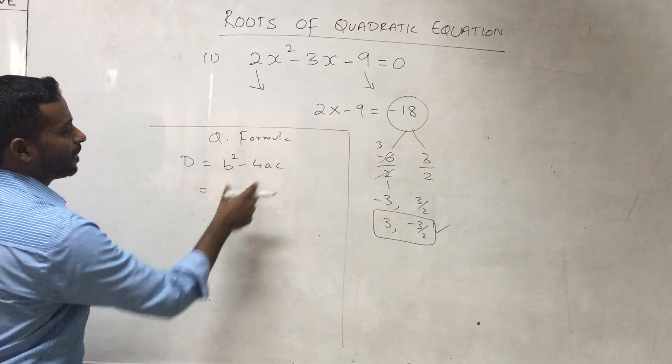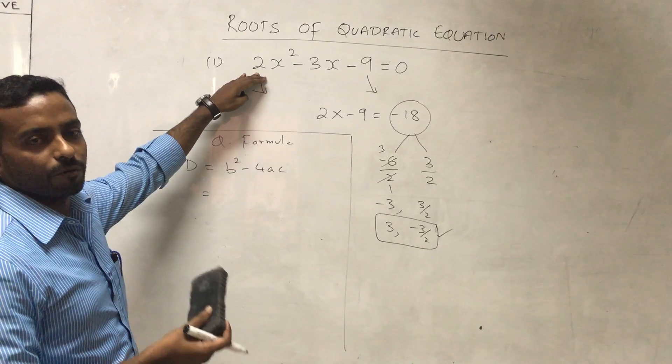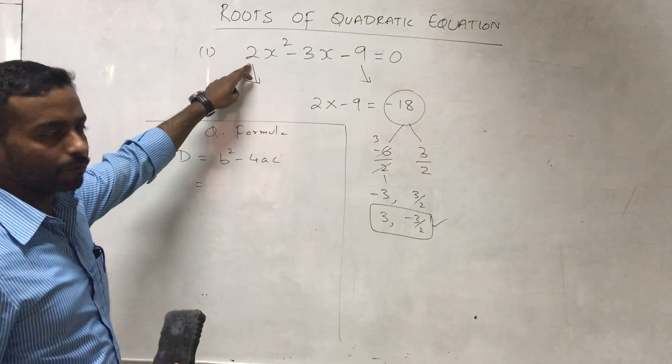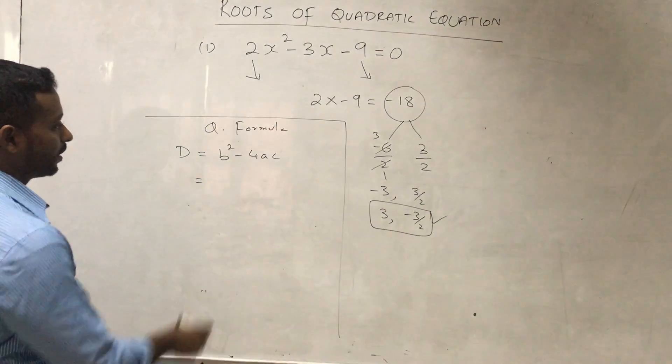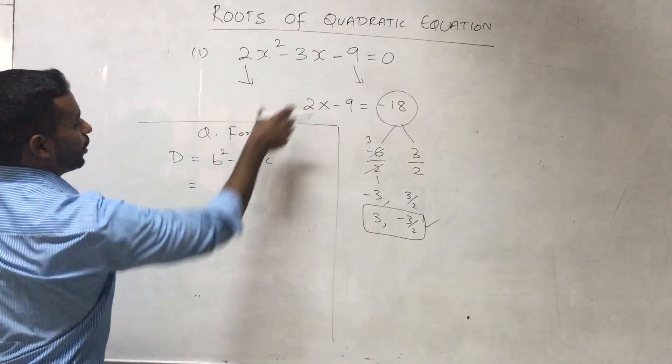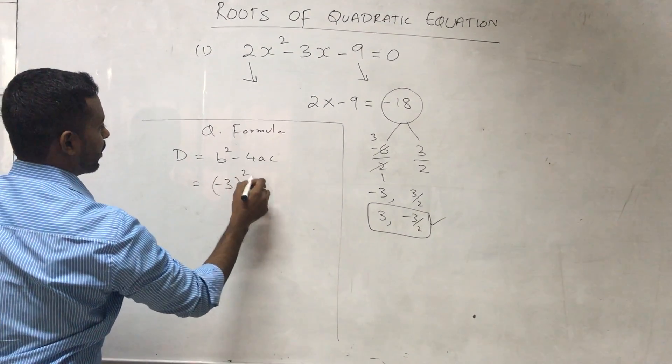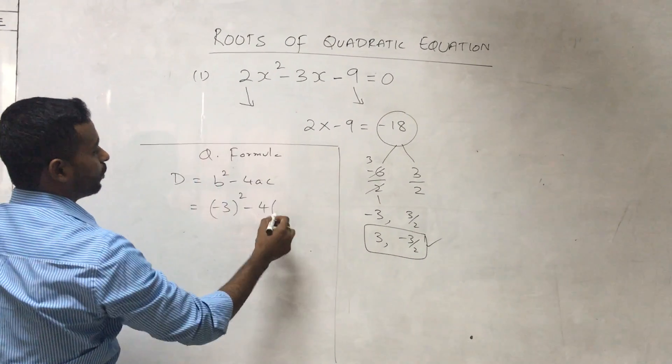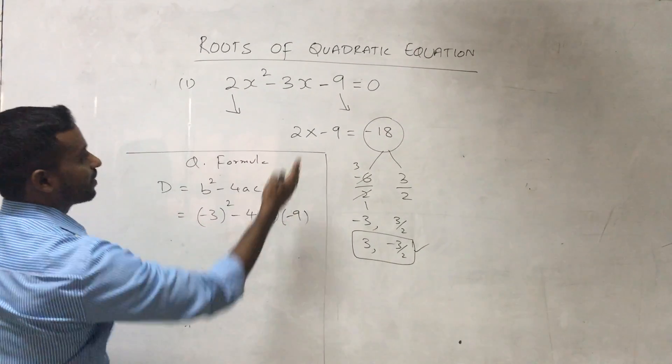Remember, a, b, c are the coefficients of the quadratic equation. a is the coefficient of x², b is the coefficient of x, and c is the constant. I'm going to plug in these values. My b is -3, so -3 squared as in the formula. a is the coefficient of x² and c is the constant number, -9.